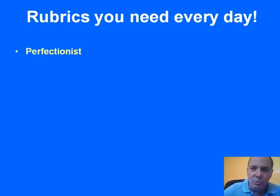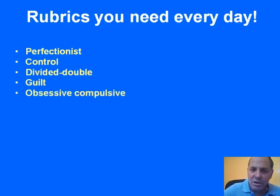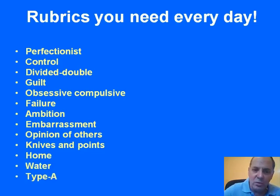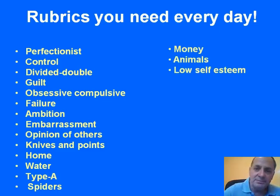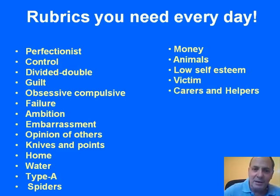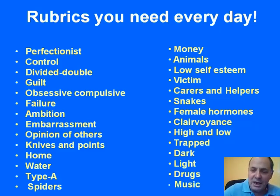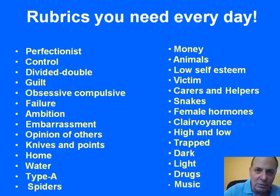These are the rubrics we have at the moment, and the repertory is developing all the time: Perfectionist, Control, Divided, Double, Guilt, Obsessive-compulsive, Failure, Ambition, Embarrassment, Opinion of Others, Knives and Points, Home, Water, Type A People, Spiders, Money, Animals, Low Self-Esteem, Victim, Carers and Helpers, Snakes, Female Hormones, Clairvoyance, High and Low, Trapped, Dark, Light, Drugs, and Music. We continue to develop this repertory according to the rubrics we find most needed in practice or from feedback from users.